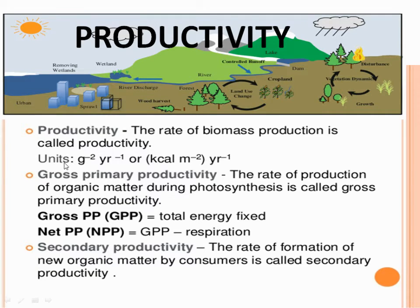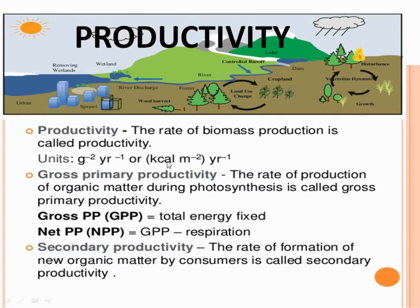The units are grams per meter square per year, which is in mass, and kilocalories per meter square per year, which is in energy form. That means we can define productivity in the form of biomass as well as in the form of energy.